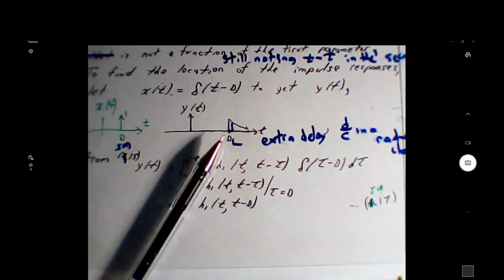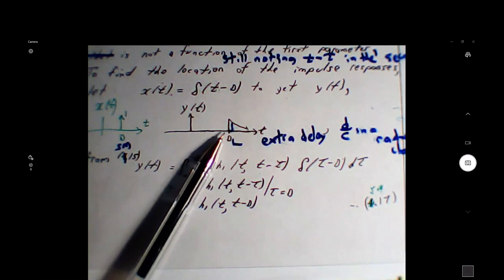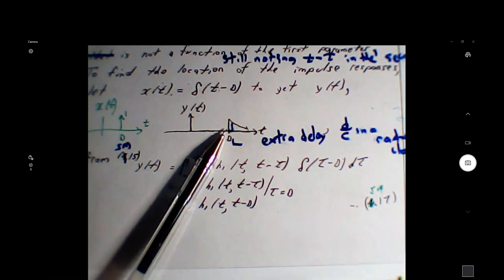All right, so y(t) versus t - there will be an extra delay due to the speed of light, the signal traveling at a distance d.